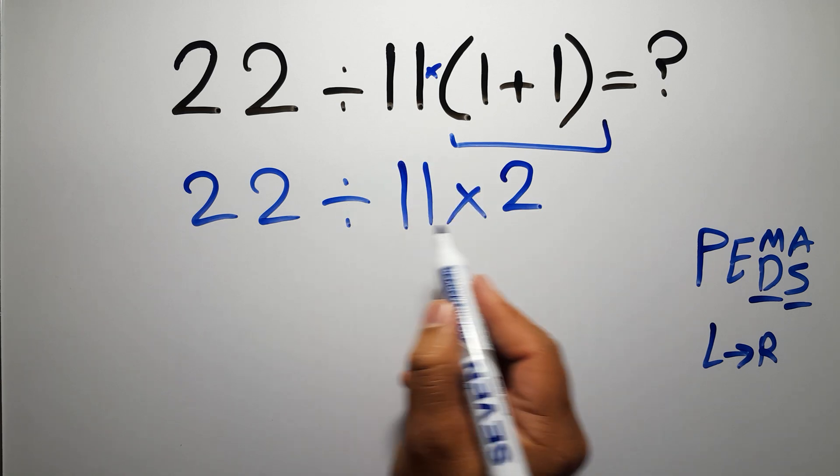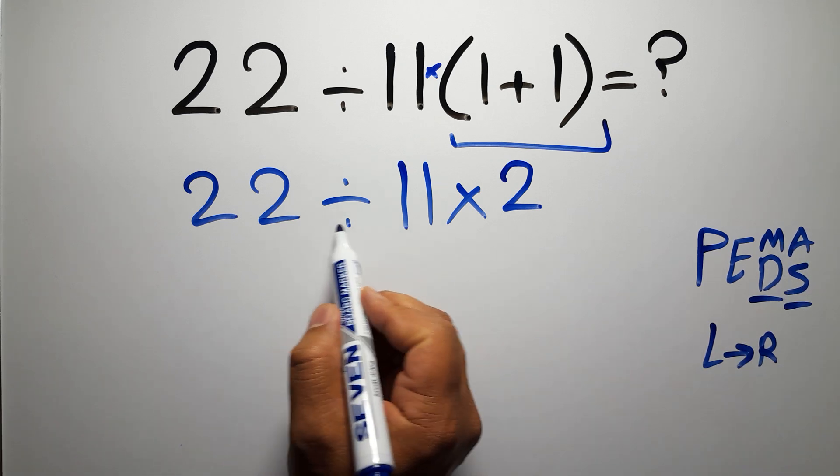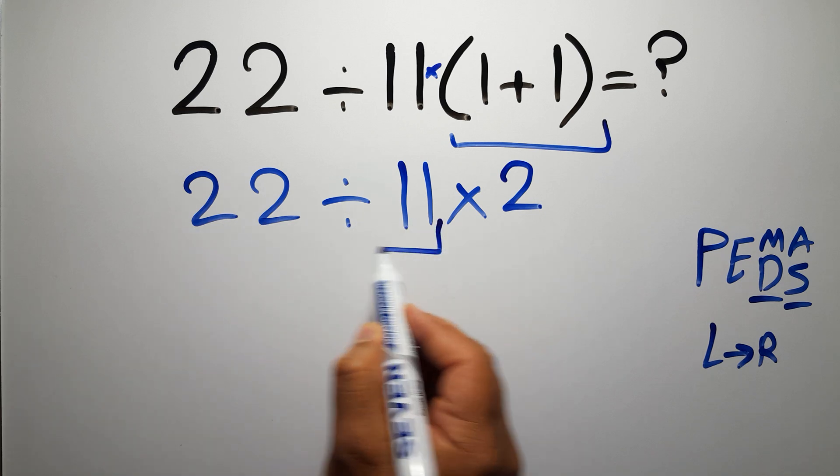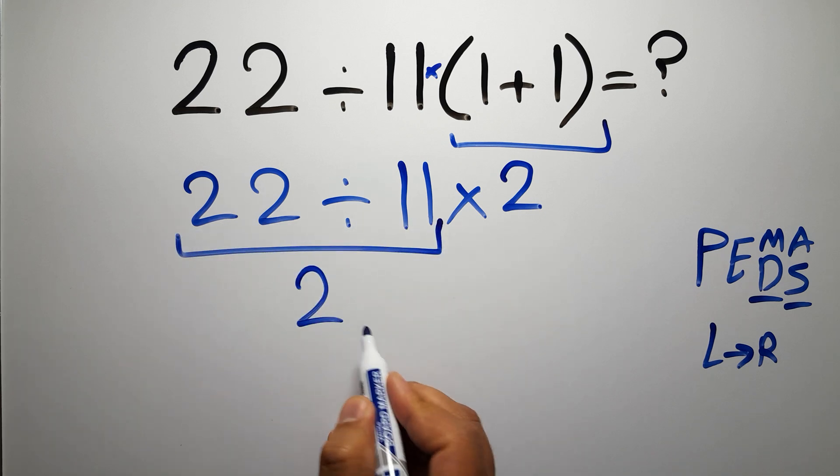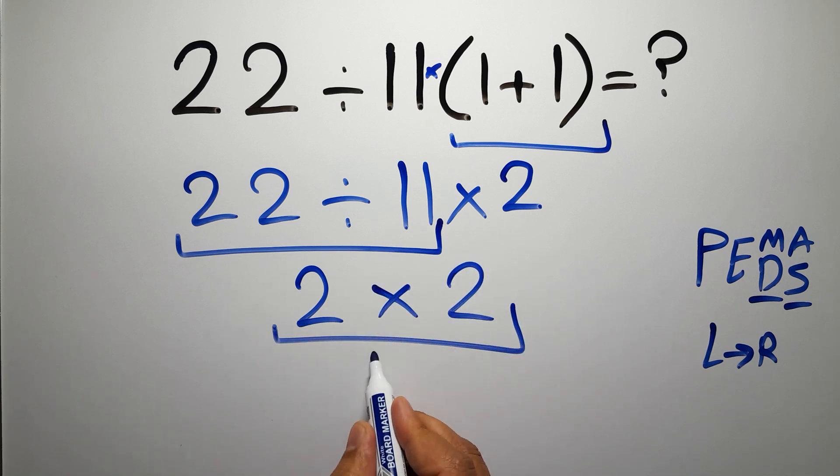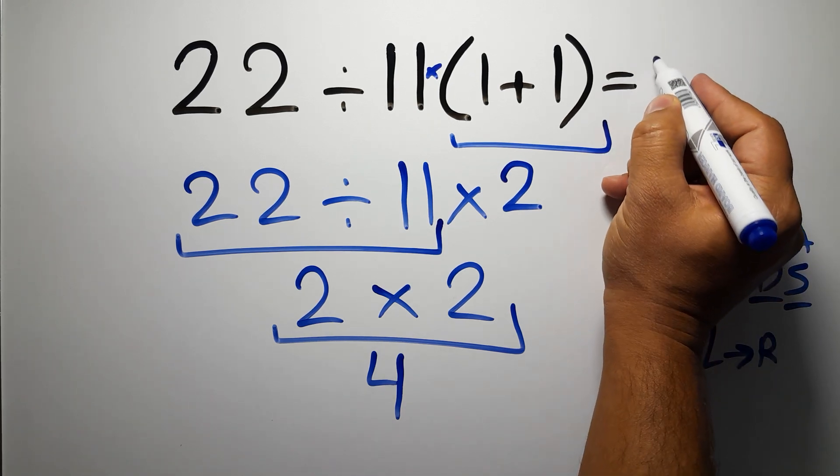Now we have one division and one multiplication. As I said, multiplication and division have equal priority, and we have to work from left to right. So here first we have to do this division, 22 divided by 11 gives us 2, so 2 times 2, which gives us 4, and this is our final answer to this problem. The correct answer is 4.